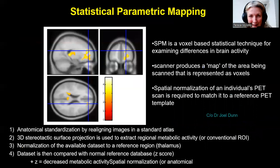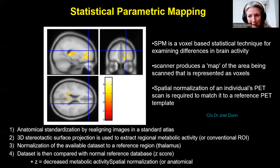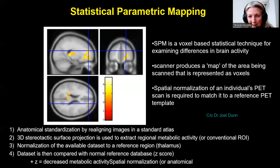All the examples shown so far have been on visual assessment. There are also packages such as BRASS and Cortex-ID for statistical parametric mapping, where the PET brain gets realigned into a standard atlas, data is normalized to a reference region using the thalamus, and that dataset is compared to a normal reference database to produce a Z-score. This allows you to see subtle foci of hypometabolism not visible visually. This has been recommended possibly for people who are first starting out looking at brain PETs — it's an adjunct, not a necessity.